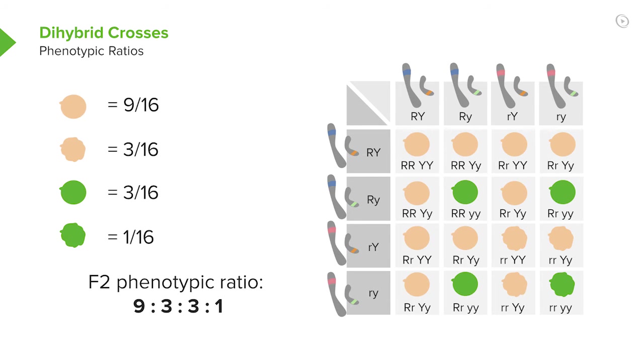So this brings us a nine to three to three to one phenotypic ratio. We could go into a lot of detail about the genotypic ratio, but that's not really the point here.